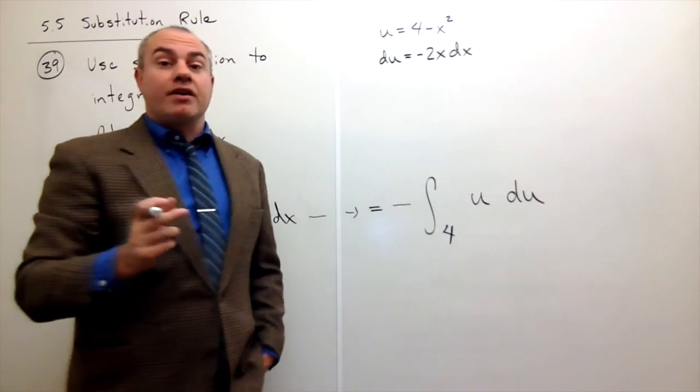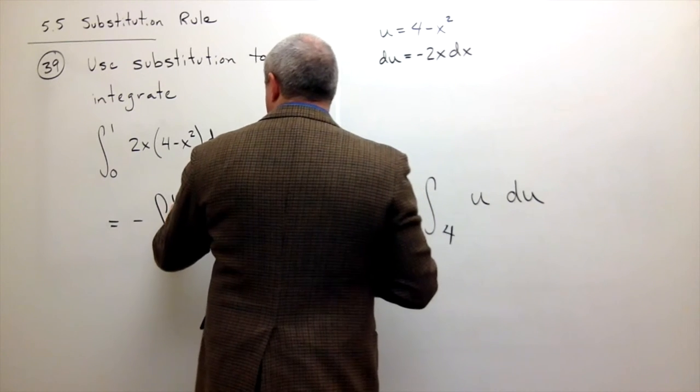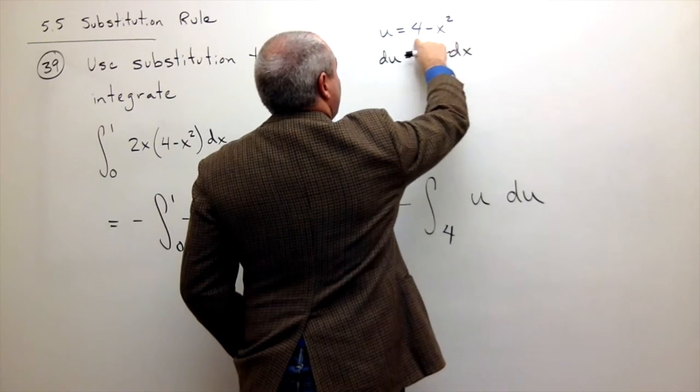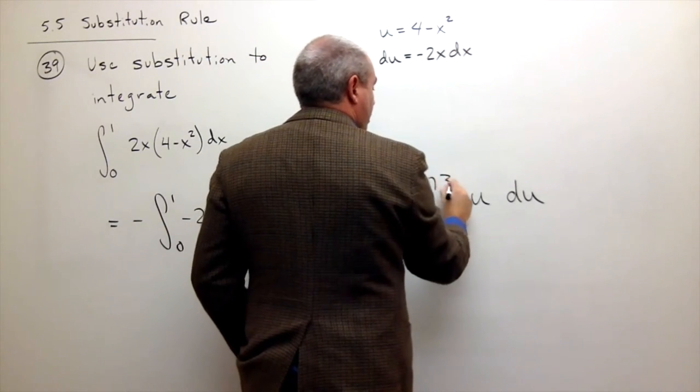Do the same thing with the value 1. So I get u is equal to 4 minus 1 squared, which is 4 minus 1, or 3.